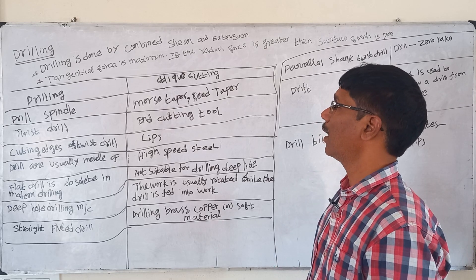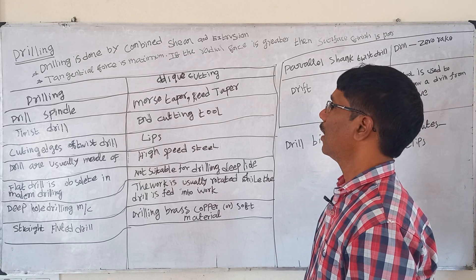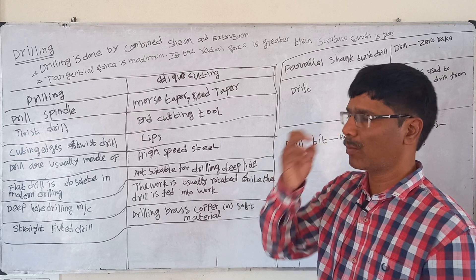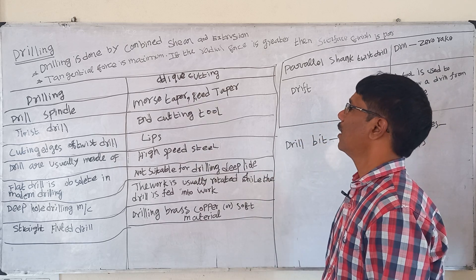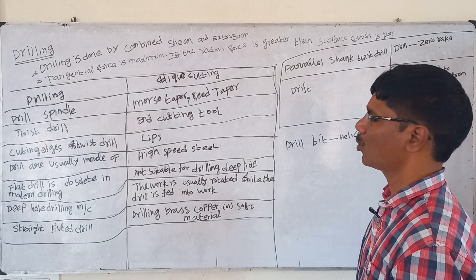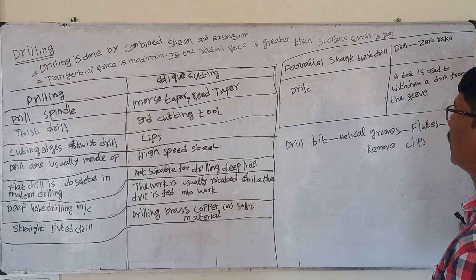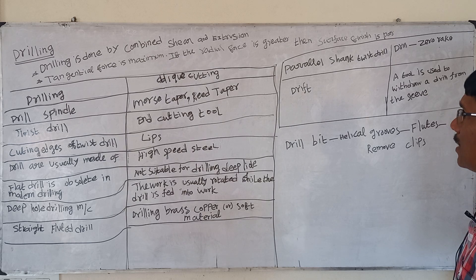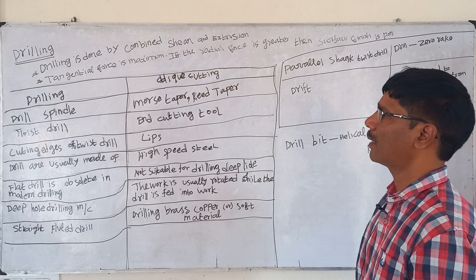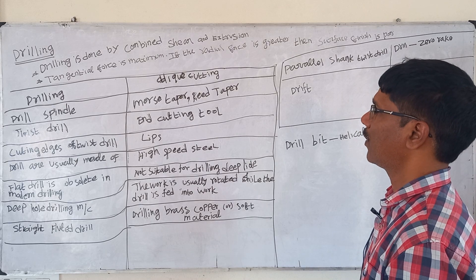Drilling is the hole-making operation. In drilling, the combined shear and extrusion processes occur together. The tangential force should be maximum in drilling operation; when the radial force is greater, the surface finish will be poorer. So obviously the tangential force should be maximum in case of drilling.